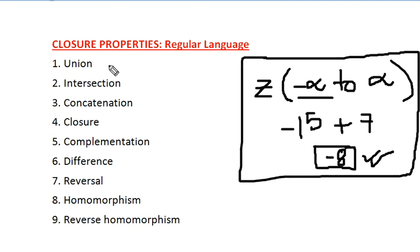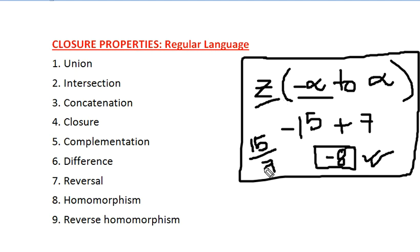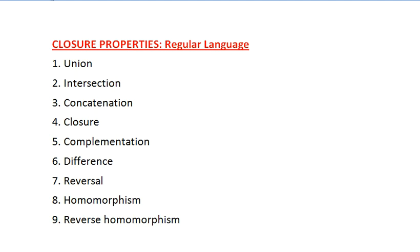This is the general definition of closure — you should understand it before starting these topics. However, if you divide 15 by 7, you get a floating point number that does not belong to the set of integers. So the set of integers is not closed under the division operator. Closure means: after performing certain operations within an area, the result still resides within that same area.